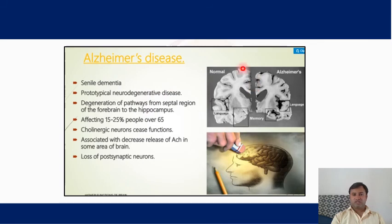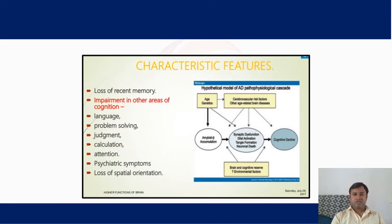As shown in this figure, this is a normal brain and this is the damaged portion caused by Alzheimer's disease. Characteristics of Alzheimer's disease include problems with language, problem solving, judgment, calculation, attention, psychiatric symptoms, and loss of spatial orientation.